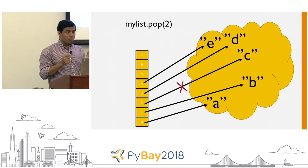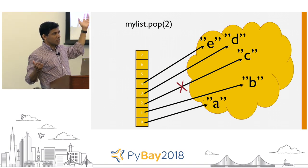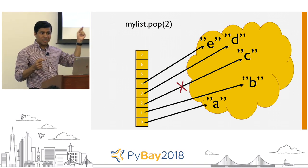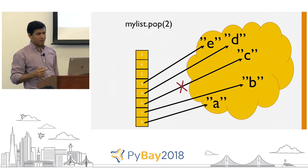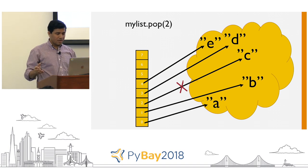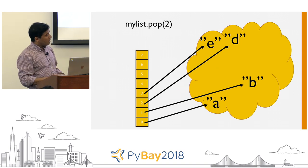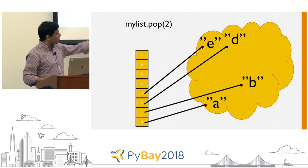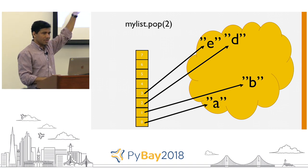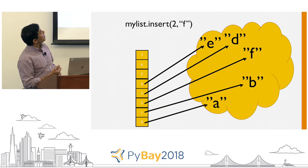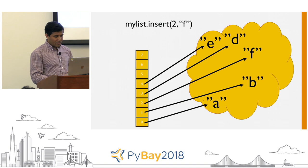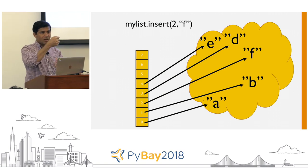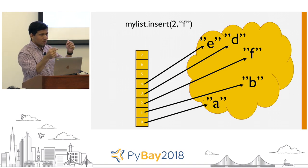Pop with no index is O(1) because you're popping only the last element — nobody has to move. But pop at a specific index means moving stuff around, worst case O(n). Similarly, mylist.insert(2, f) is also inefficient: to insert f at index 2, I have to move elements at index 2 and 3 up — what was at index 2 becomes 3, what was 3 becomes 4. Moving stuff up just to place one element makes it O(n) worst case.